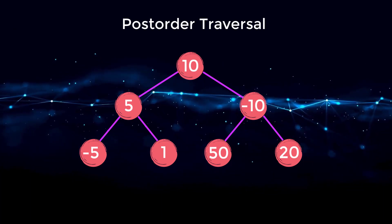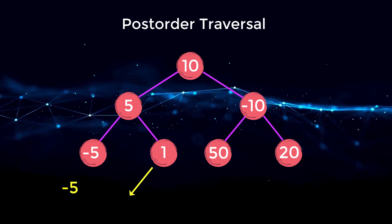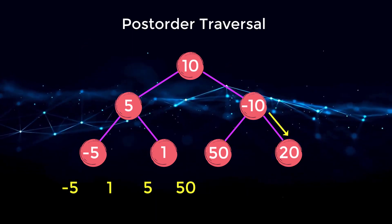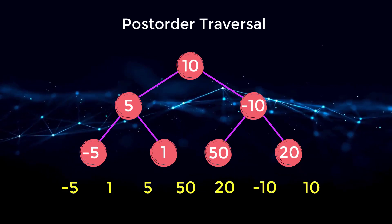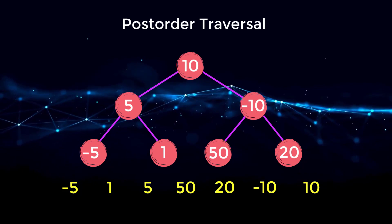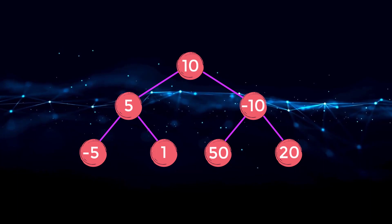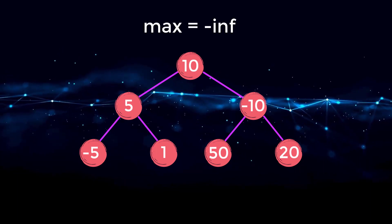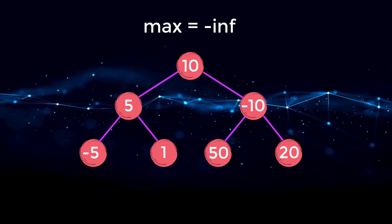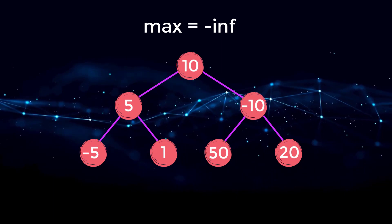In a post-order traversal, we go to the left child, then the right child, and then visit the node. If we printed out the nodes of this tree in post-order traversal fashion, the nodes would be printed from bottom to top, which is exactly what we want. We will also need an integer variable called max to keep track of the maximum path sum we come across as we traverse the tree. This can be initialized to negative infinity because we can have negative numbers in our nodes.